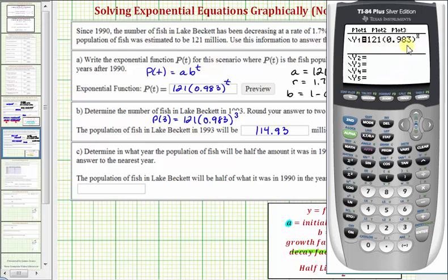Now because we have our function in y1, we could go back to the home screen by pressing second mode, and then y1 of three will also give us the function value of p of three. If we press vars, right arrow, enter, enter, and then in parentheses three, of course we'll get the same function value.